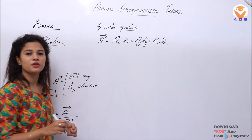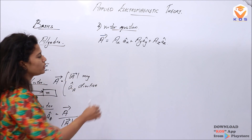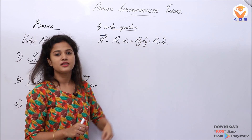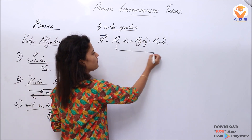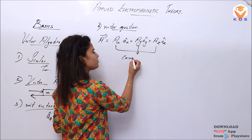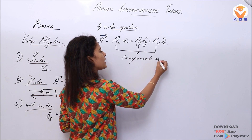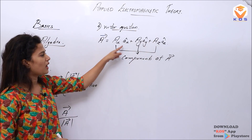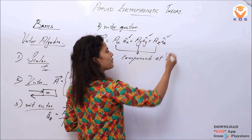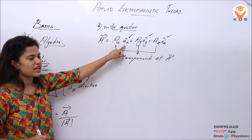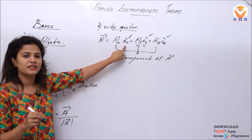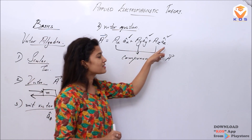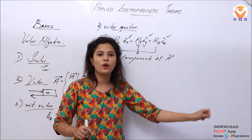We define the vector equation with 3 components. We have capital AX, AY, and AZ — these are called components of the vector. We have three equations and they are called components of vector A: the X component, the Y component, and the Z component. AX̂, AŶ, and AẐ are the unit vectors directed along X, Y, and Z directions respectively.